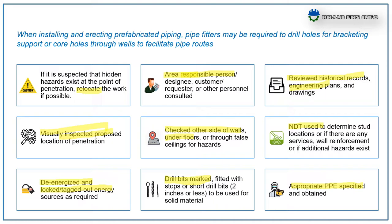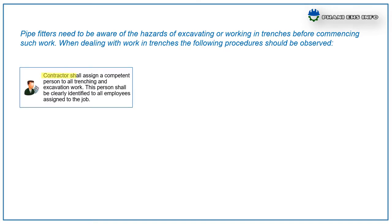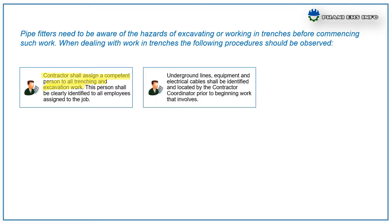Second: underground pipelines. Pipe fitters need to be aware of hazards of excavating or working in trenches. Before commencing such work, the following procedures should be observed. The contractor shall assign a competent person to all trenching and excavating works, and this person shall be clearly identified to all employees assigned to the job. Underground lines, equipment, and electrical cables shall be identified and located by the contractor coordinator prior to the beginning of the work.